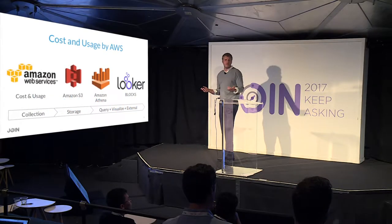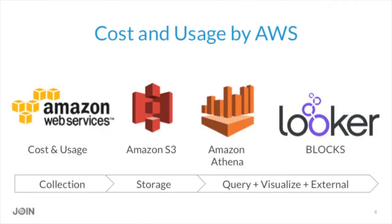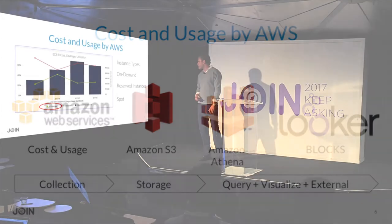Looker blocks are pre-built dashboards and data models built for specific use cases. In this case, we're looking at cost and usage. The pipeline we set up: we have a cost usage report coming out of Amazon, sent directly to S3 as a CSV file, and we just put Athena on top. We use Athena because there's a lot of billing data and we don't query it that often, so it's much easier than setting up an entire ETL process and Redshift.